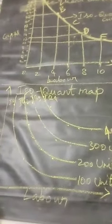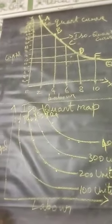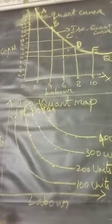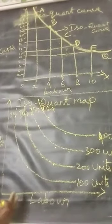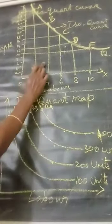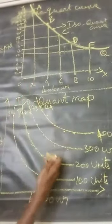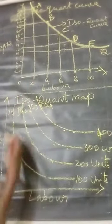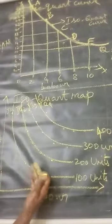In simple terms, what is iso-quant map? It is a family of iso-quant curves. It is a family or group of iso-quant curves. So it is called group of iso-quant curves.